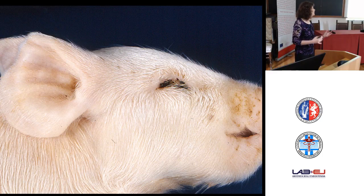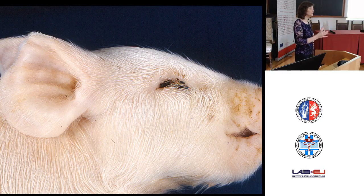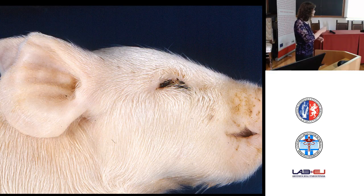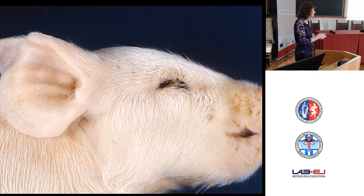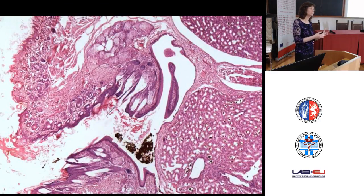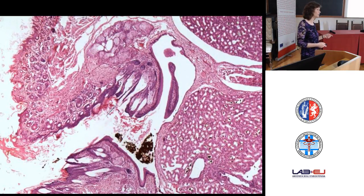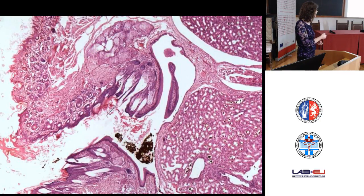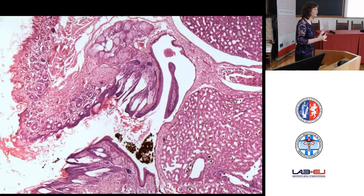Sometimes there may be an impression that there are no globes whatsoever — no eye formation, just a little slit where the eyelids should have been. Grossly, we may truly not see any eye formation — a true case of anophthalmia — where all we have are the eyelids and glands but no globe formation at all. This is very rare.